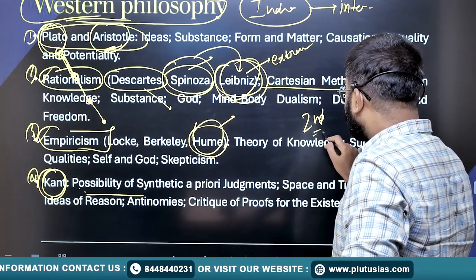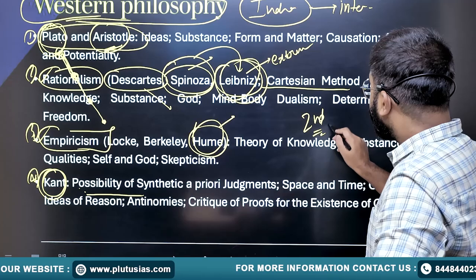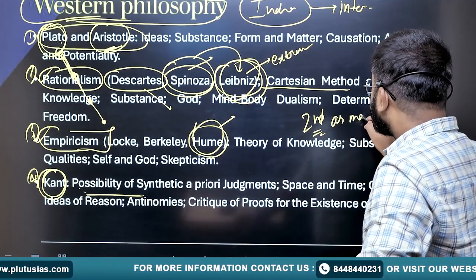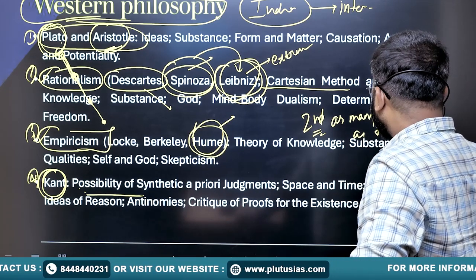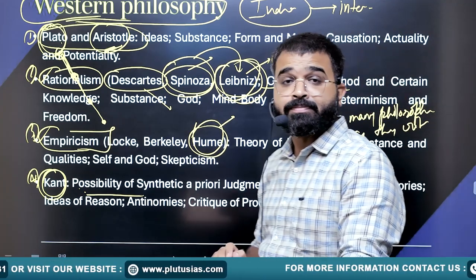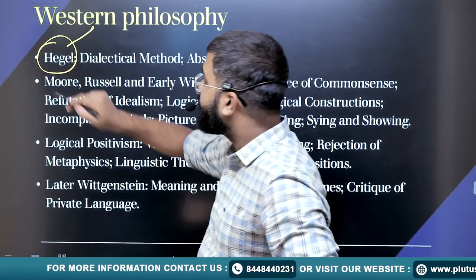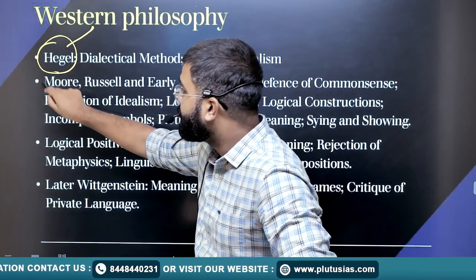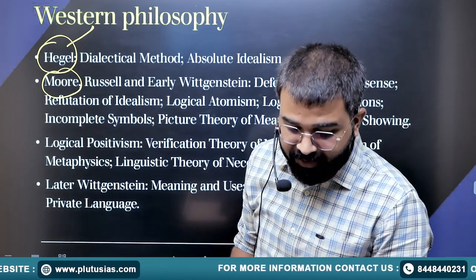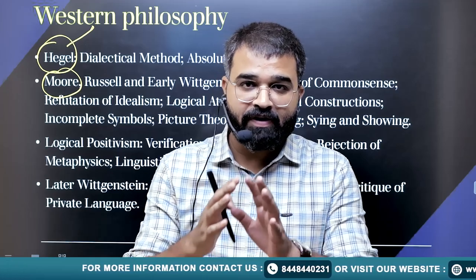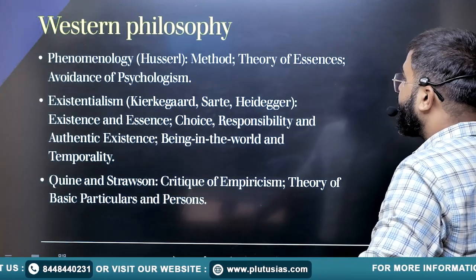The second point regarding Western philosophy, especially from the examination perspective, is that in the exam you have to mention as many philosophers as possible — those who criticized that particular philosopher. For example, Hegel was criticized by many philosophers including the existentialists. So wherever a question comes from Hegel, you should criticize Hegel using existentialism. Comparing one philosopher to another will fetch you good marks, and the same is true for Indian philosophy as well.